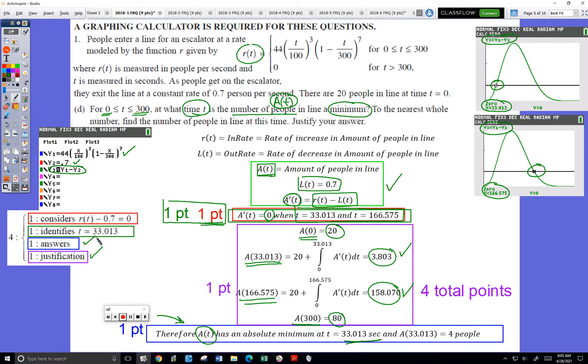So the time when the number of people in line is lowest is 33.013 seconds. And the number of people in line at that time is four people. Again, read slow and careful. They said to the nearest whole number, find the number of people in line at that time. So four total points. Just must be slow and careful.